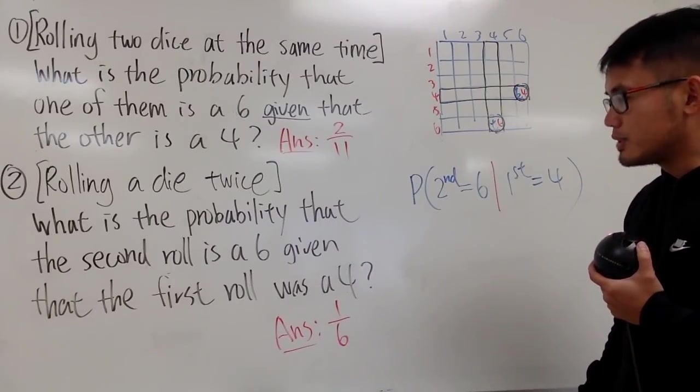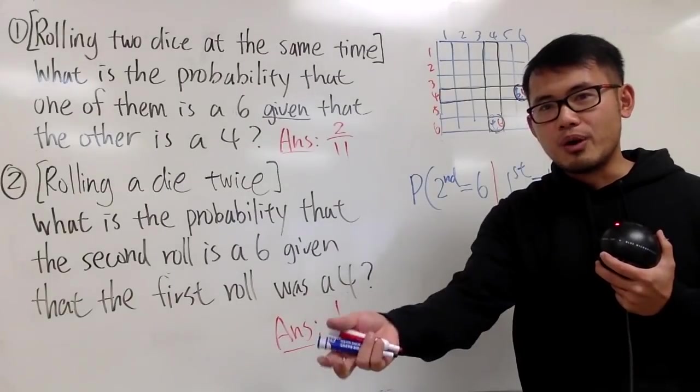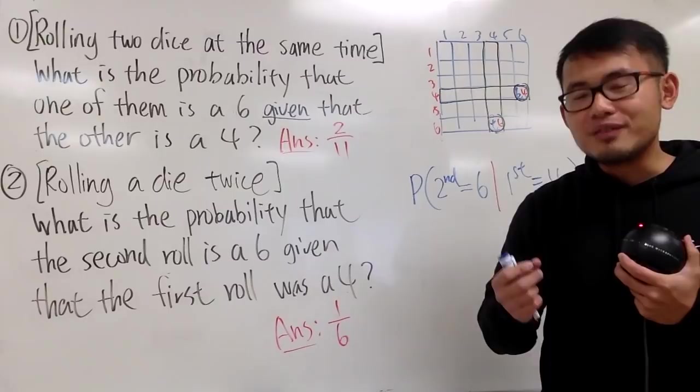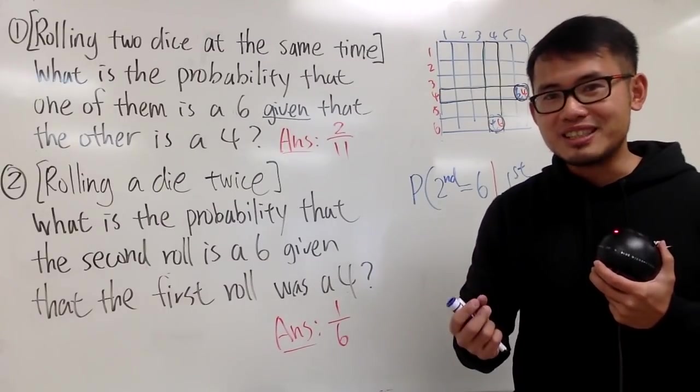But the problem with this is that once you finish rolling the first time, you get a 4. You pick out the die and you're going to roll it again. You have to ask yourself, what's the probability that when you roll the dice the second time, you get a 6?